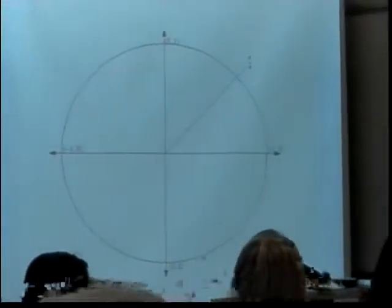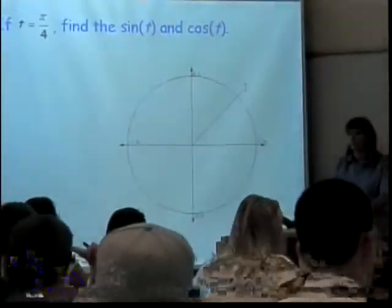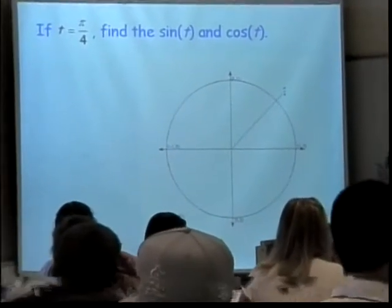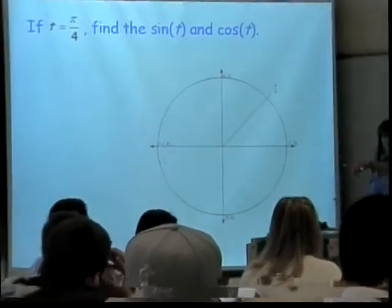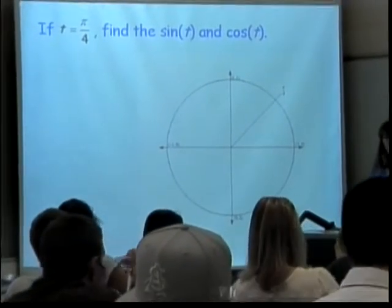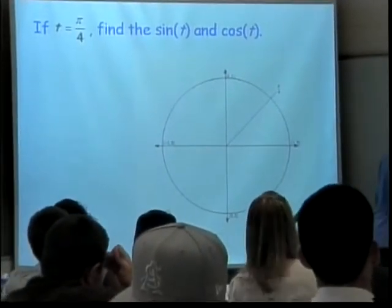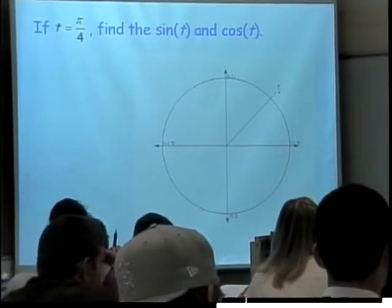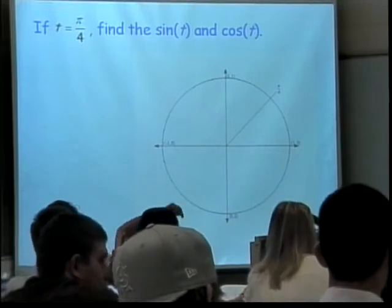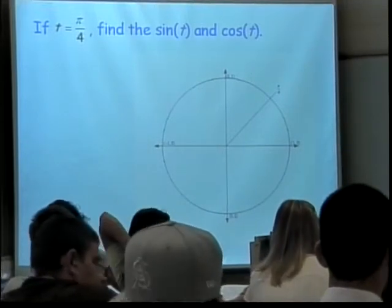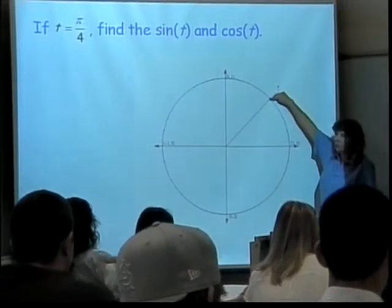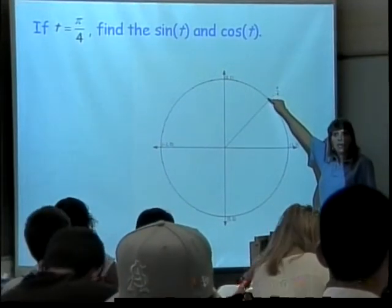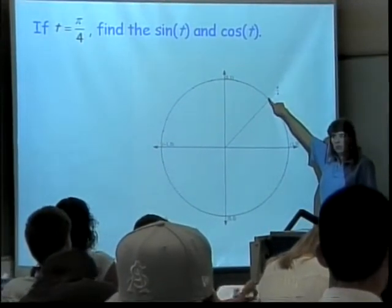We've already defined the sine of an angle as the Y coordinate where the terminal side runs into the unit circle, and the cosine of the angle is the X coordinate where the terminal side runs into the unit circle.